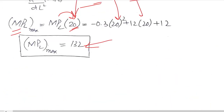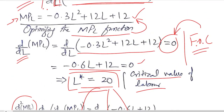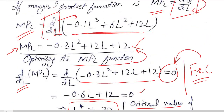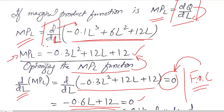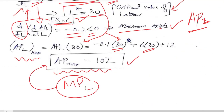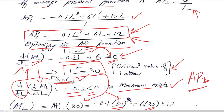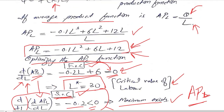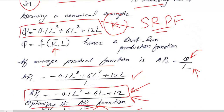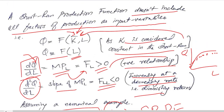In this way we have learned that optimization can be extended to any economic function — whether it is total product, marginal product, or average product. This has enabled us to optimize any economic function we might encounter in economic analysis. Thank you.